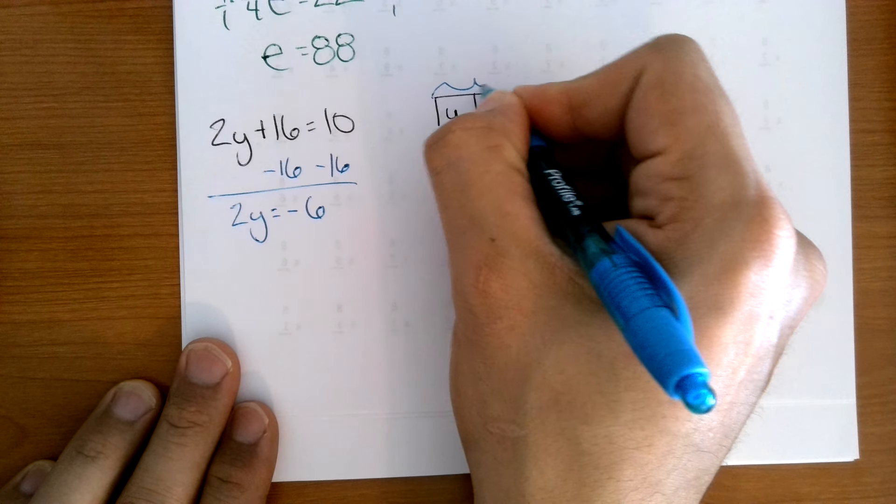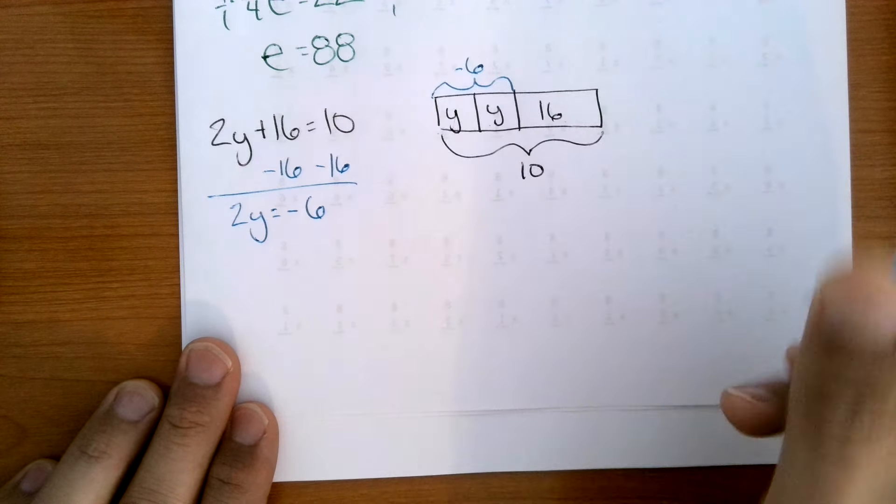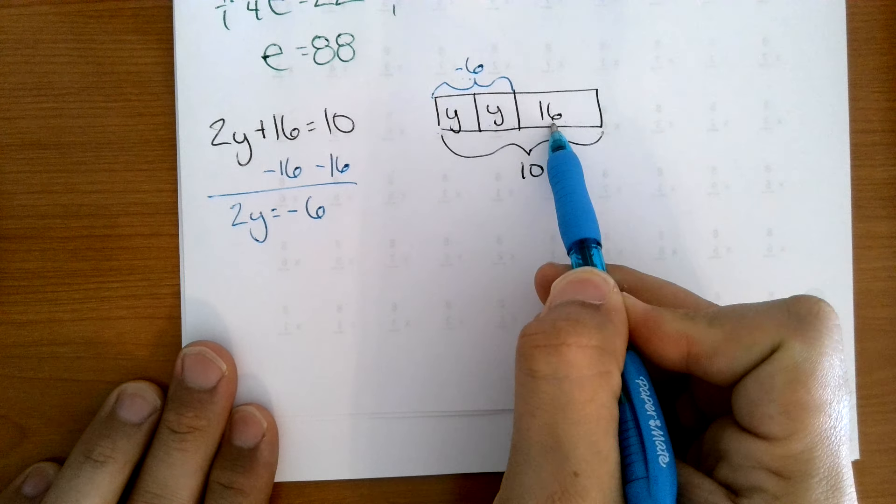So we know that these two together actually equal negative 6, and that makes sense. Negative 6 plus 16 equals 10.